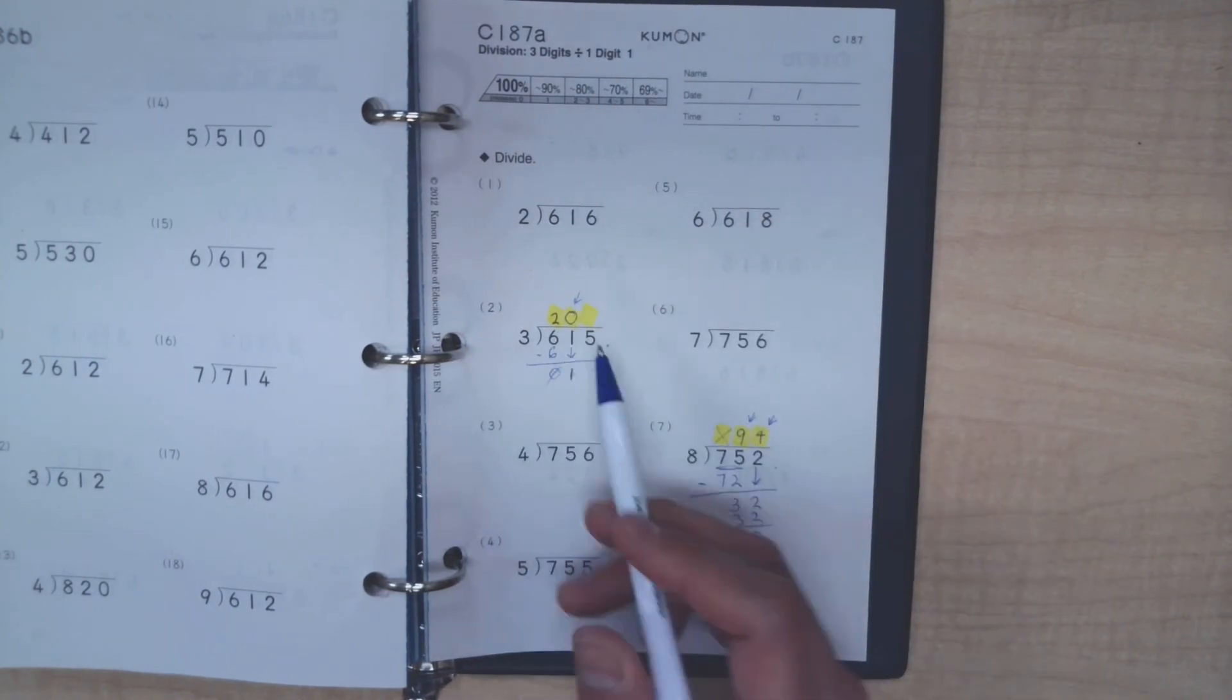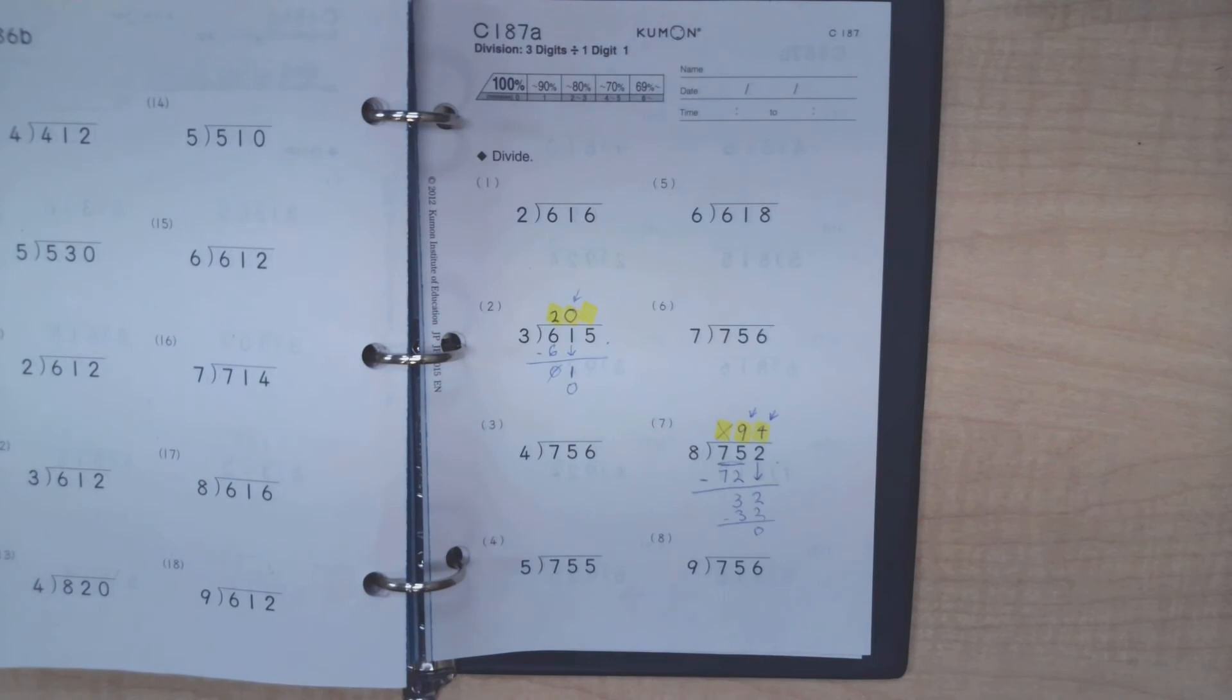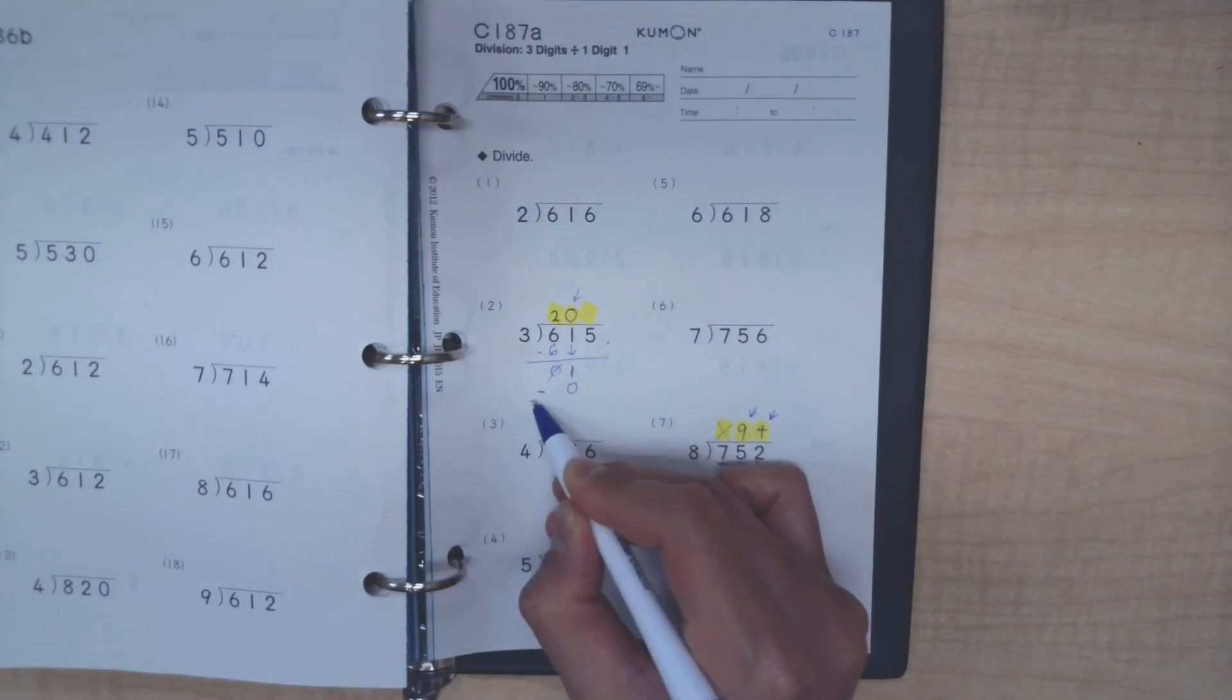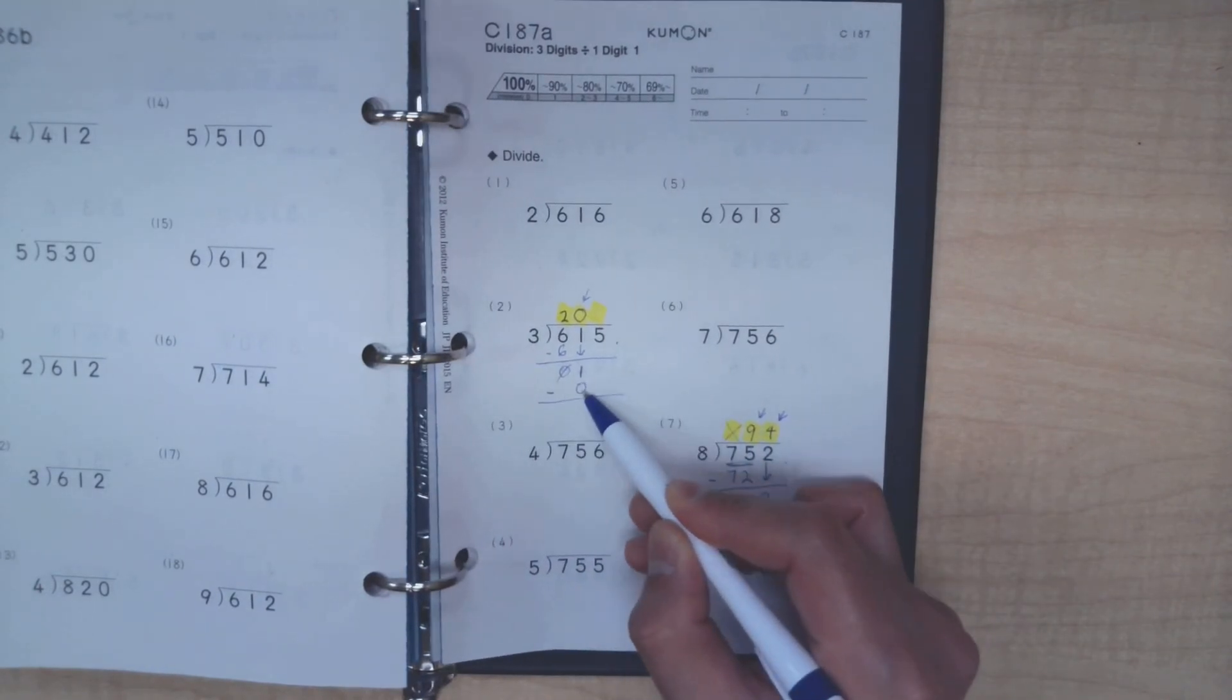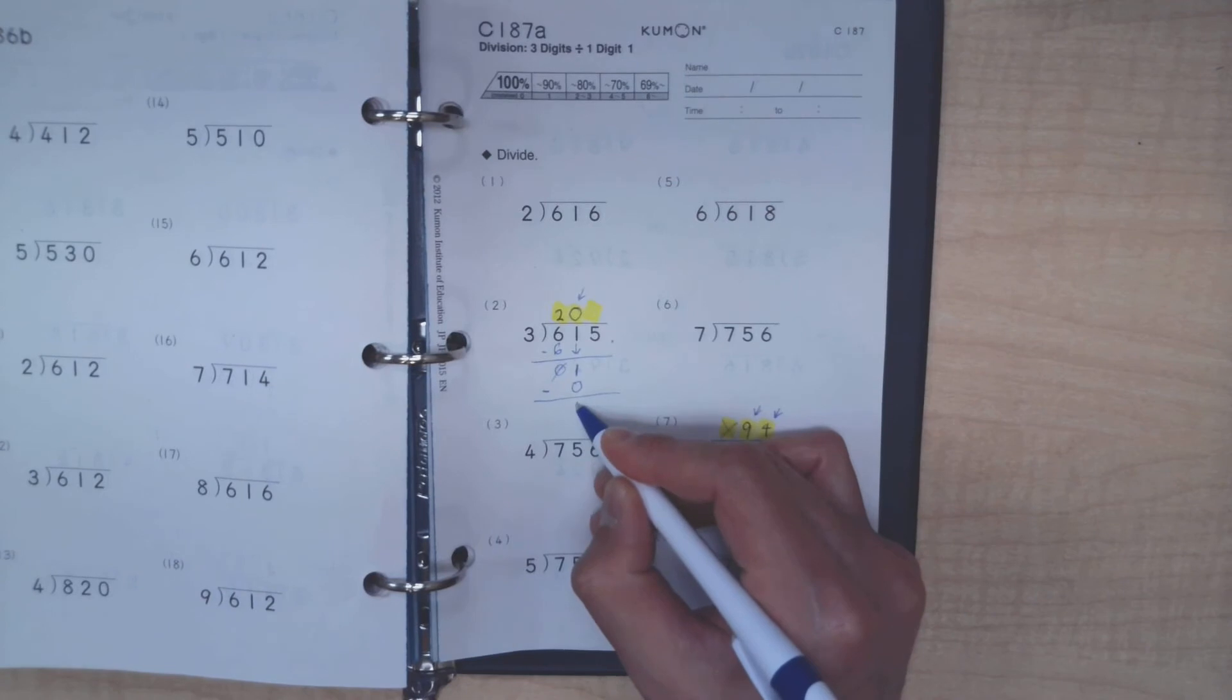3 times 0 is 0, and proceed with your subtraction. What's 1 minus 0? That's 1.